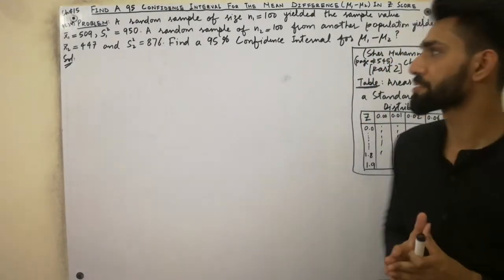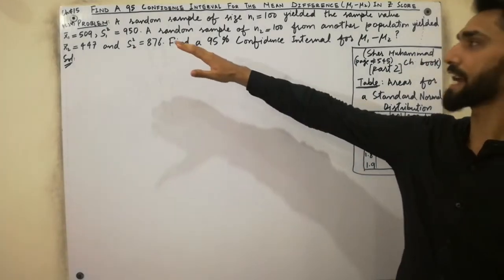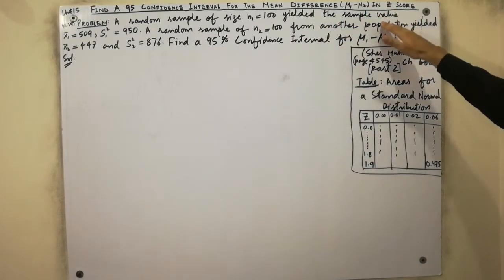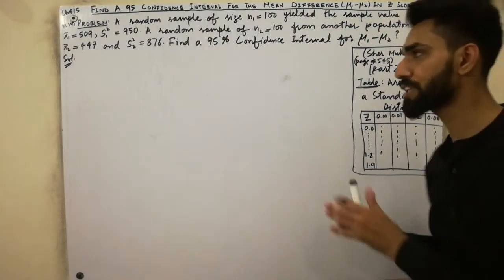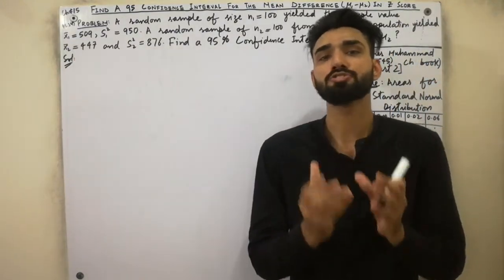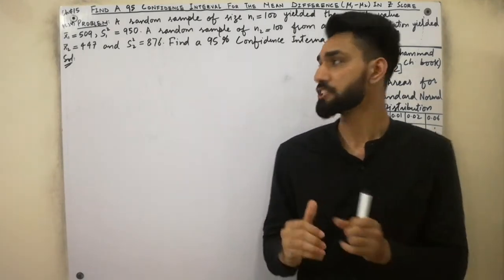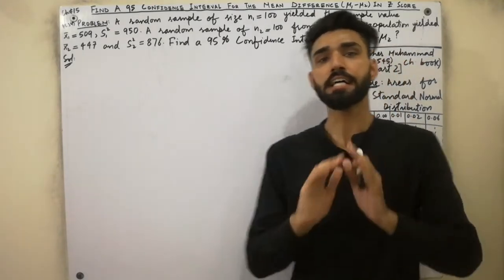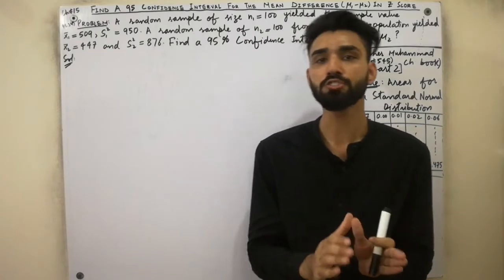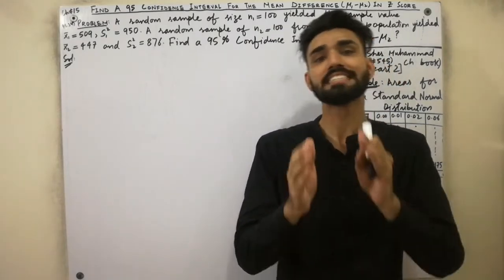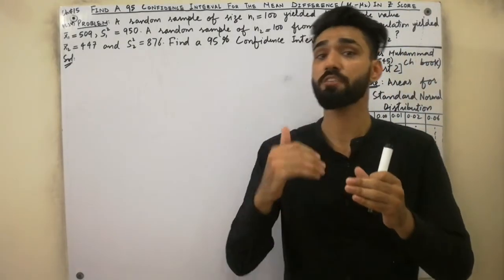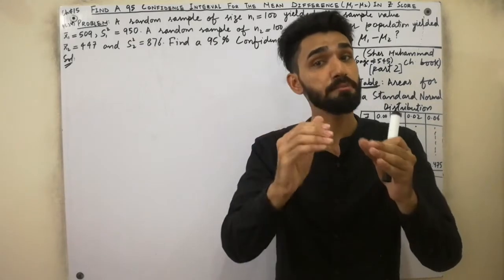Assalamu alaikum dear friends. Today I am here to explain how to find a 95% confidence interval for the mean difference μ1 minus μ2 using the Z-score, or normal distribution. I will discuss this very conceptually, which nobody tells you about, so watch this lecture completely. I have already uploaded videos in which I have told secrets and tricks to find the confidence interval.